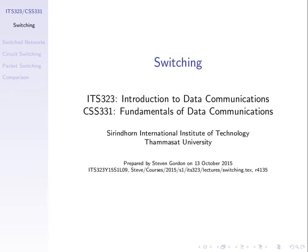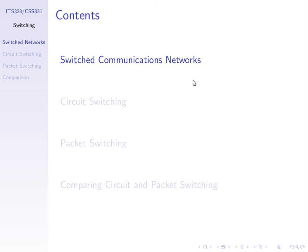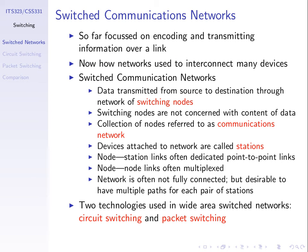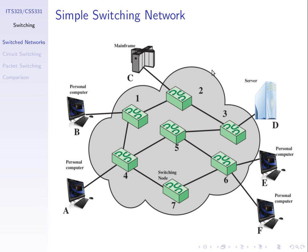We're going to look at networking now — how do we send data across a network? We'll talk about switching and what is a switched communications network. So far we've focused on transmitting data across a link. Now, how do we use networks to connect multiple devices and multiple links and get data across them? Those networks are referred to as communication networks — in particular, switched communication networks.